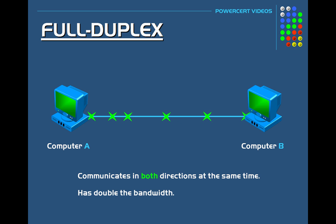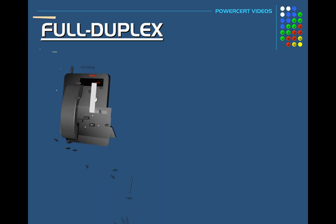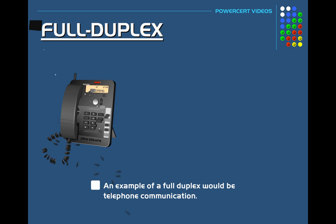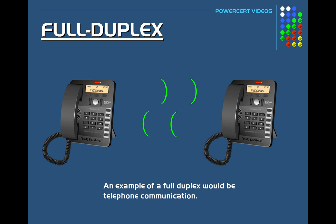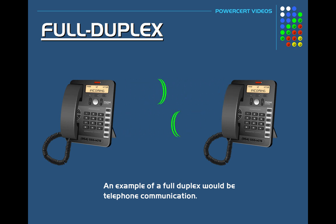A good example of full duplex would be telephone communication. When you talk to somebody on the phone, you can talk to and hear the other person at the same time. You don't have to wait to do one or the other — you can talk and listen simultaneously.